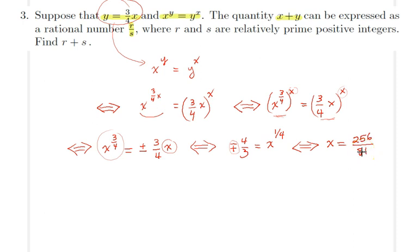Similarly we can plug it into our very first equation to find an expression for y as well. 3/4 x is 3/4 times 256/81. We multiply these, the 3 and 81 simplify, and we get 64/27 for the value of y.